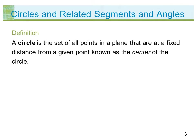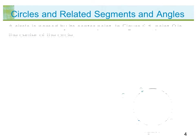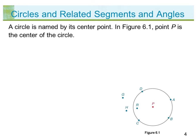A circle is the set of all points in a plane that are at a fixed distance from a given point known as the center of the circle. A circle is named by its center point.